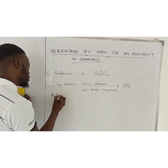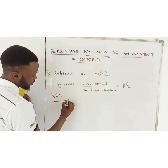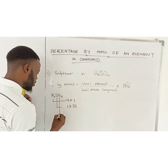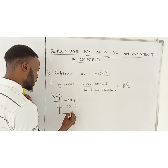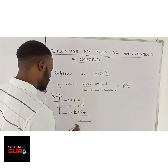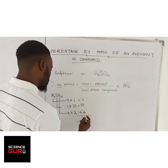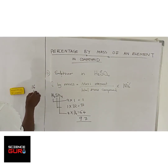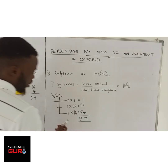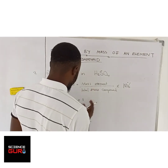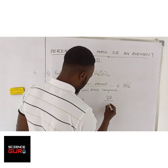Let us find the total mass of sulfuric acid (H₂SO₄). Hydrogen: 2 × 1 = 2. Sulfur: 1 × 32 = 32. Oxygen: 4 × 16 = 64. Adding these up: 2 + 32 + 64 gives a total mass of 97. So: mass of sulfur is 32, over 97, times 100%.